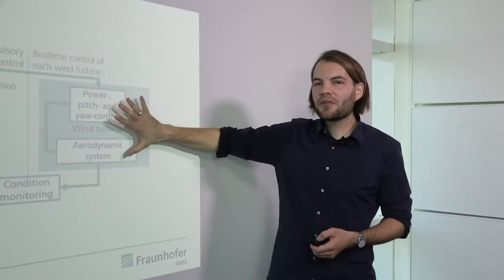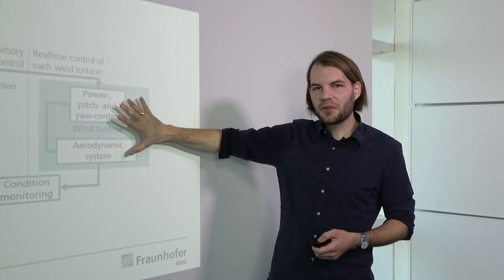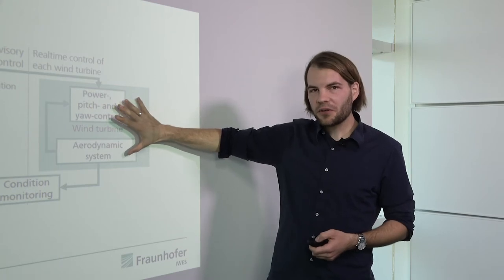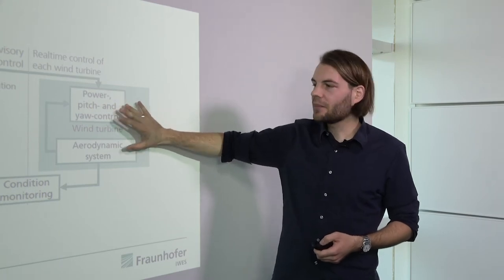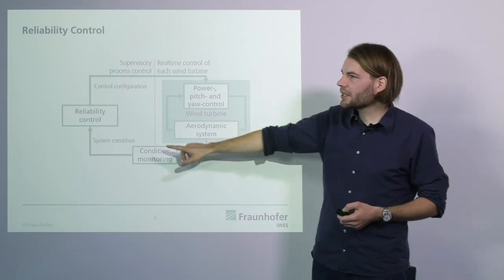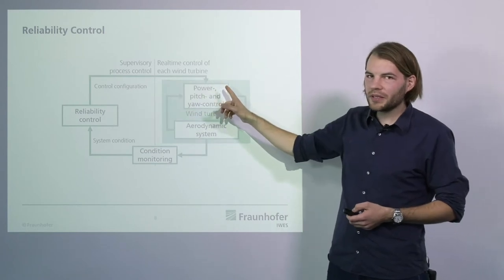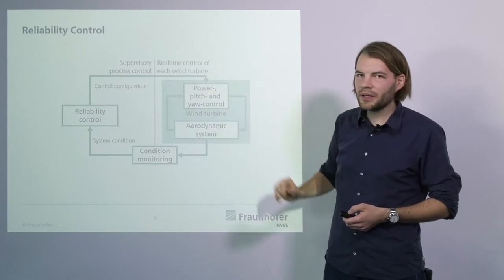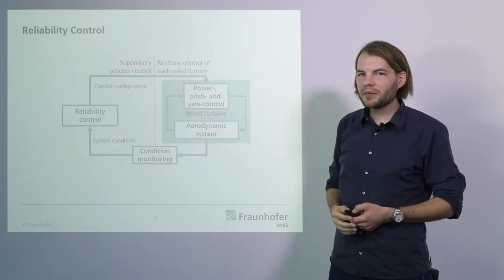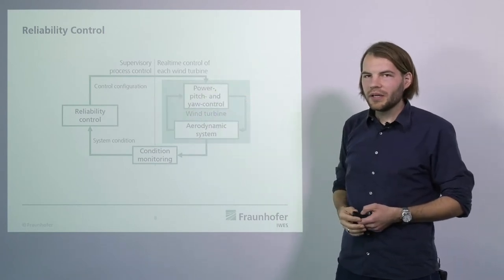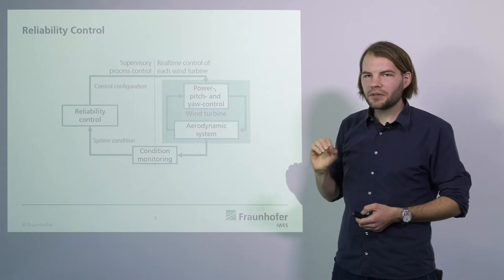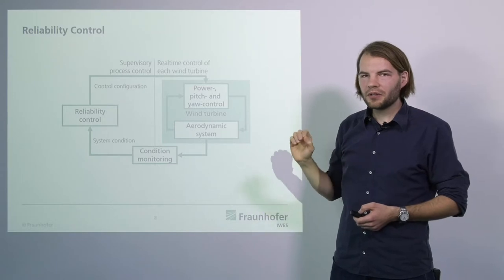And here we have two control loops. The first one is on a very fast time scale operating in real time, whereas the second one is only concerned with reliability and lifetime of the turbines. It is very much slower and allows us a continuous adaptation over years.